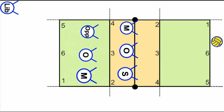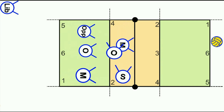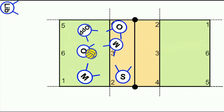In the first serve-receive, the frontcourt outside and middle players are the first to move across. The outside player wants to run through to position four. Everybody is in the serve-receive position and we're going to serve. What you may notice is that all the players have turned to face where the ball is. This is one of my pet peeves — frontcourt players, middle and outside, just back off the net with their backs to the ball, playing no part in the serve-receive.